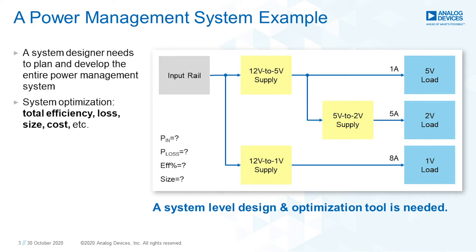You can quickly see the voltages and current requirements of each load, and you can start to explore the system-level performance metrics including total efficiency, power loss, thermal performance, board size, and system cost. To make this analysis easy, a system-level design and optimization tool is needed.